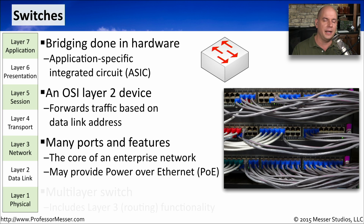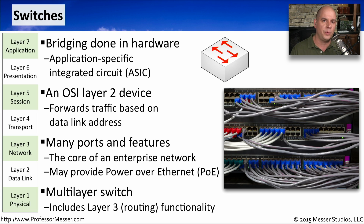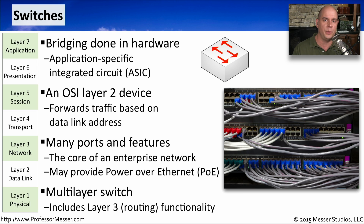Some switches are designed with Layer 3 functionality, so they can effectively route information as well. At that point, we're layering two devices together — a switch and a router inside the same device. We tend to call those multi-layer switches, or Layer 3 switches, to designate that they can not only switch information, but can also be used as a router as well.